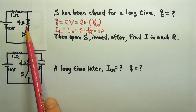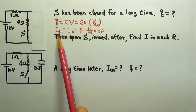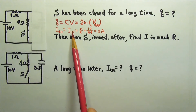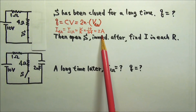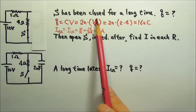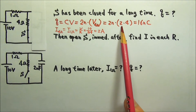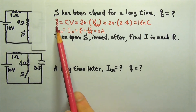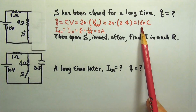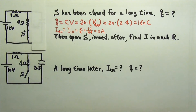These two resistors are in series, so they get the same current — V over R — 2 amps. So the 4 ohms gets I times R, 8 volts. And therefore the charge on the capacitor is 16 nano coulombs.